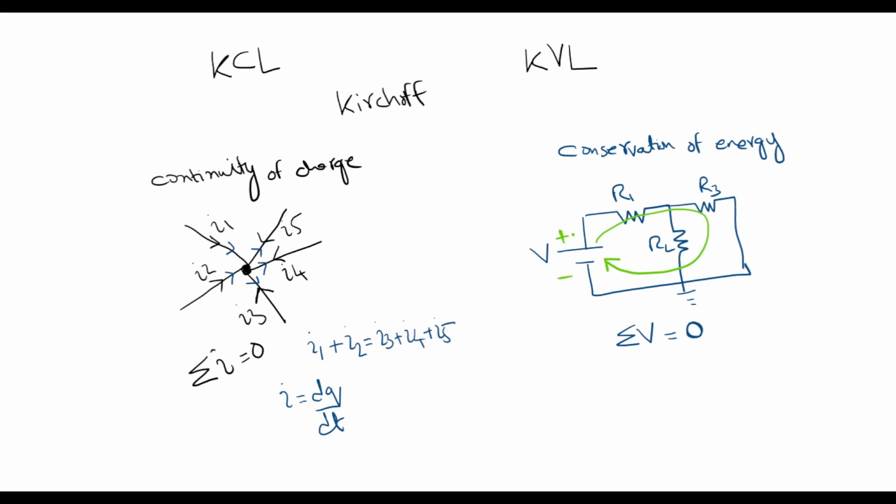So imagine in this loop if I say that a current I is flowing, then I can write a loop equation going from here minus to positive as negative. Then this drop across resistance R1 would be positive and negative like this, and then positive and negative like this. So I can write minus V plus I times R1 plus I times R3 equal to zero.